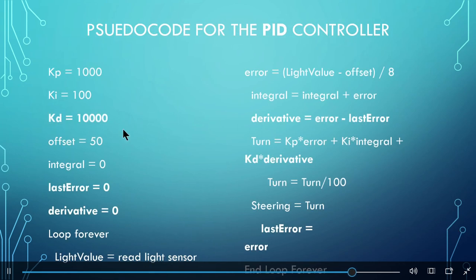The bold code is the added derivative code. We define the constant for the derivative, define a last error variable, and a derivative variable. In the loop, we subtract the last error from the current error to make the derivative. Then, we multiply the kd times the derivative, and add it to the proportional section and the integral part for the turn value. At the end of the loop, we define the current error as past error.